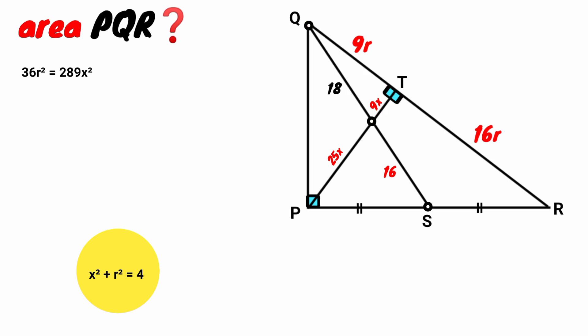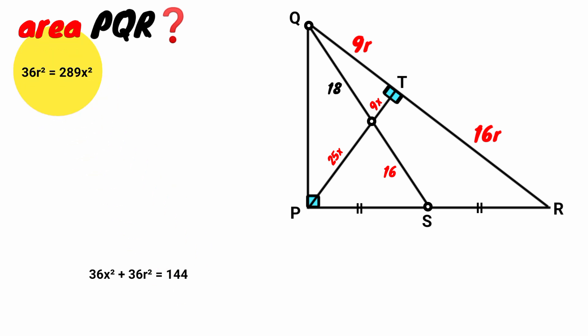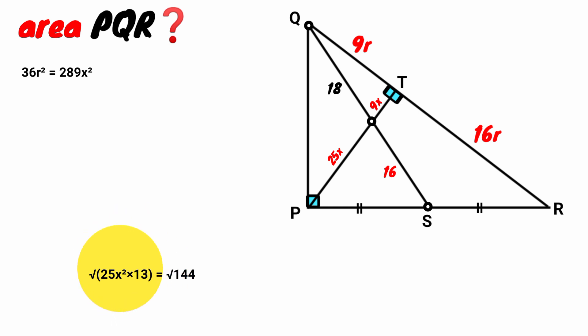Multiply both sides by 36: 36x squared plus 36r squared equals 144. Recall that 36r squared equals 289x squared. Replace 36r squared with 289x squared: 36x squared plus 289x squared equals 325x squared equals 144. Taking the square root of both sides: 325x squared equals 25x squared times 13, so the square root is 5x times root 13.